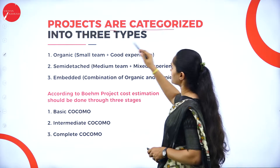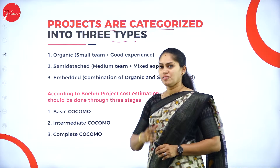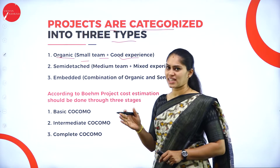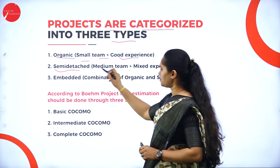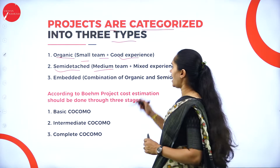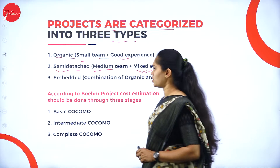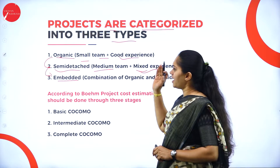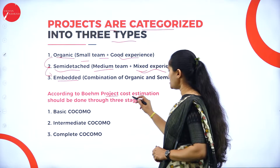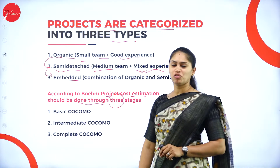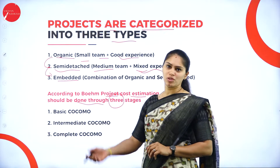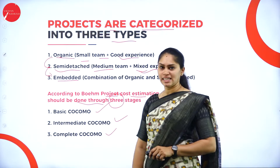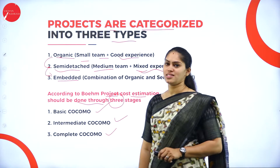When it comes to the COCOMO model, we have three kinds of projects. One is the organic project — helpful for a small team with good experience. Next, we have semi-detached — convenient for a medium project and medium team, and mixed experience is also okay. Then we have the embedded one — it will be a combination of organic as well as semi-detached. As per Barry Boehm, project cost estimation should be done through three stages: basic COCOMO, intermediate COCOMO, and complete or detailed COCOMO. With the help of these three stages, we can estimate the cost of a project.